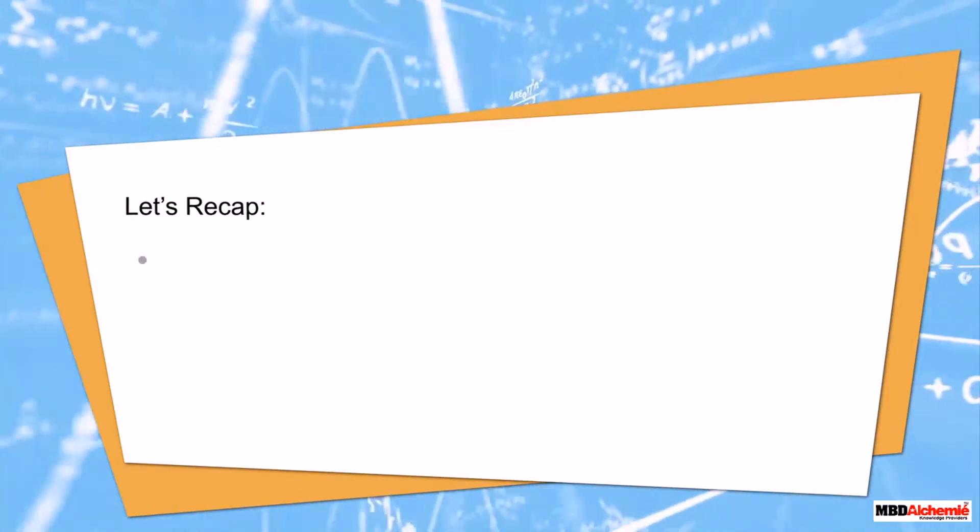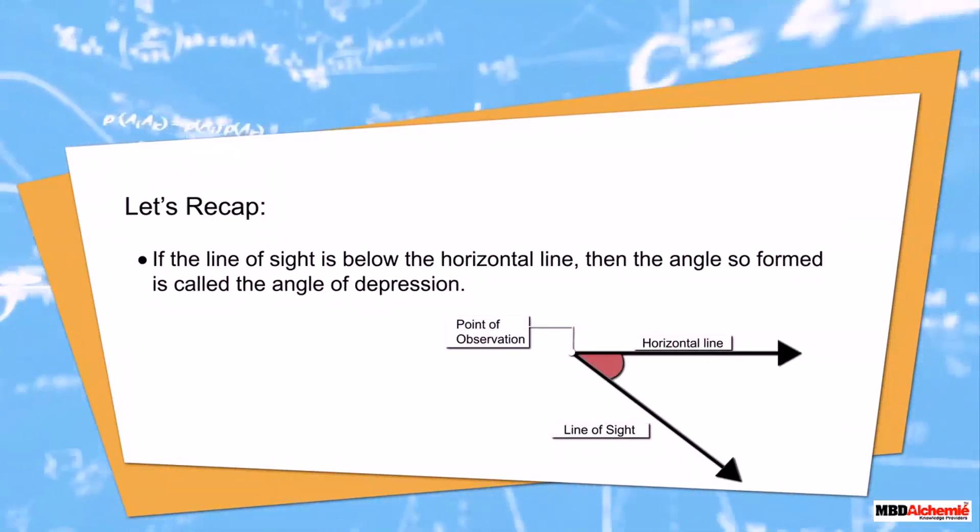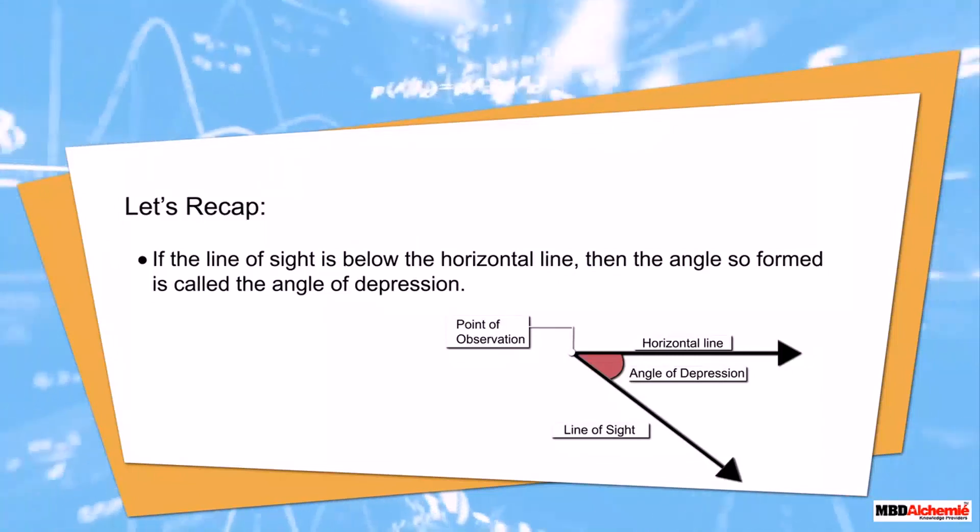Let's recap. If the line of the sight is below the horizontal line, then the angle so formed is called the angle of depression.